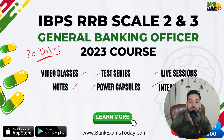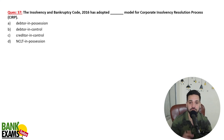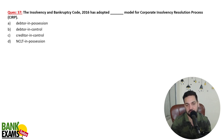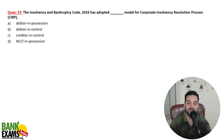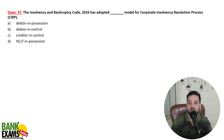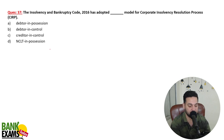The Insolvency and Bankruptcy Code, IBC 2016, has adopted a creditor-in-control model for the Corporate Insolvency Resolution Process (CIRP).